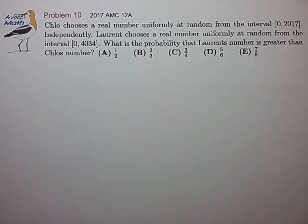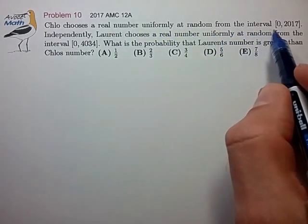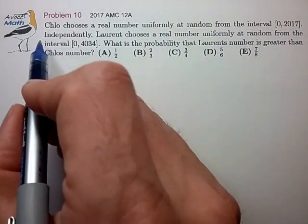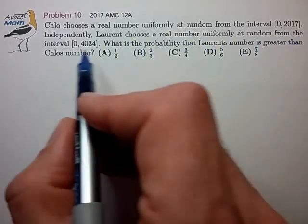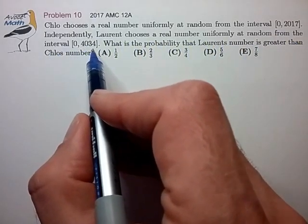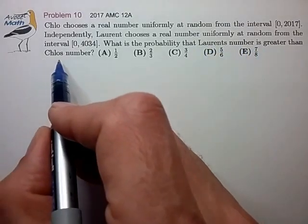Hi, this is problem 10 from the AMC 12A. Clo chooses a real number uniformly at random from the interval 0 to 2017, and independently, Laurent chooses a real number uniformly at random from the interval 0 to 4034. What is the probability that Laurent's number is greater than Clo's number?